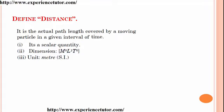Define distance. Distance is the actual path length covered by a moving particle in a given interval of time. It is a scalar quantity. Its dimension is M⁰L¹T⁰ and its unit is meter in SI.